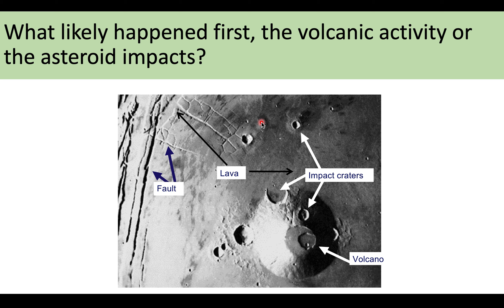Here's another example — a satellite photo from Mars. Which happened first, the volcanic activity or the asteroid impacts? We can see the volcano and impacts from asteroids all over the surface. The key observation: there are asteroid impacts on top of the volcano, which means the volcano was there first. If the asteroids had hit first and then the volcano formed, the volcano would have covered up the impact craters completely.